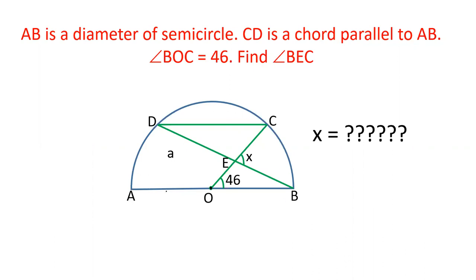AB is diameter of the semicircle. A chord CD is drawn parallel to this semicircle. CD is parallel to AB.